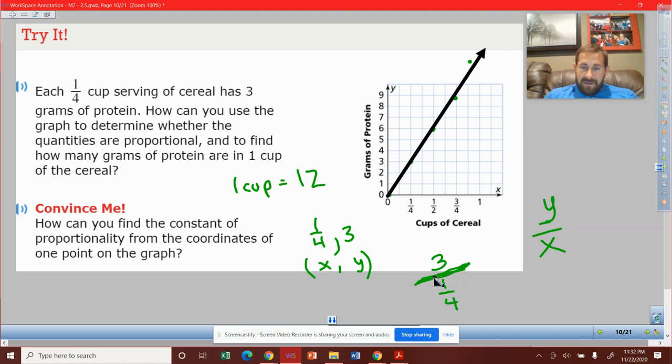Do you remember how to divide fractions? Keep, change, flip. We have three over one being divided by one-fourth. So keep it, change the sign, and flip the fraction. What do we get? 12 over one.